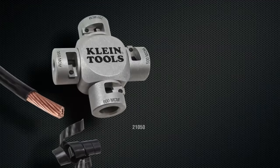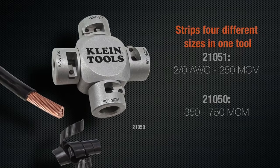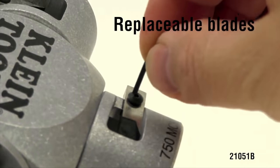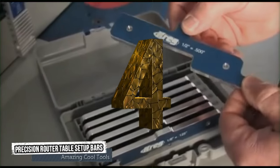The Clover design features four different sizes in one tool. Replaceable blades are available for extended use. Fourth Tool: Precision Router Table Setup Bars.